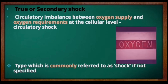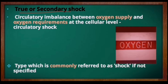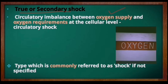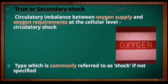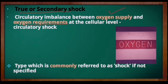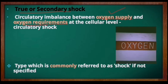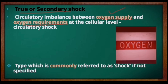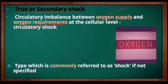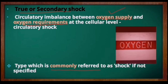True or secondary shock is a circulatory imbalance between oxygen supply and oxygen requirement at the cellular level — the body requires more oxygen than the supply can maintain. This is commonly referred to simply as 'shock' when nothing is specified. To remember the two types, you can use the mnemonic PITS: PI for initial or primary shock, and TS for true or secondary shock.